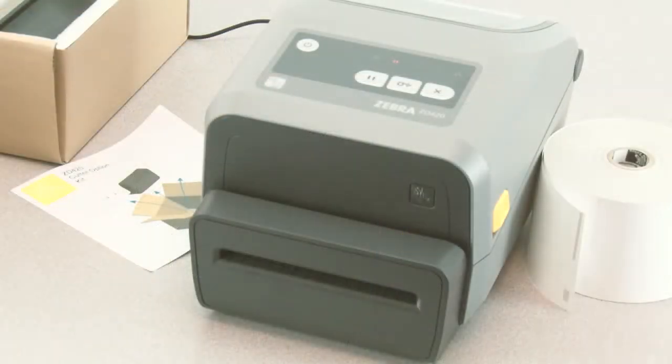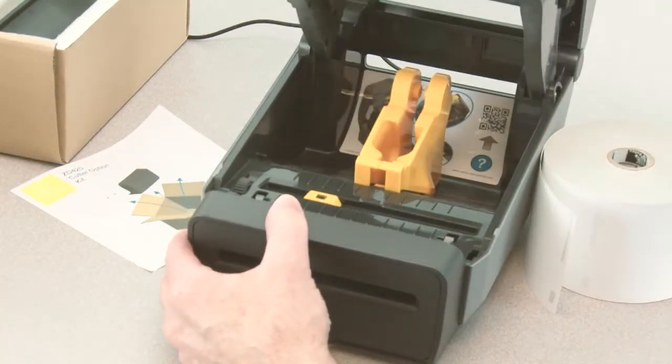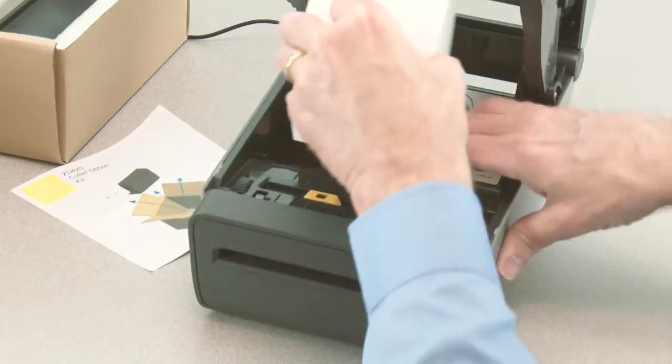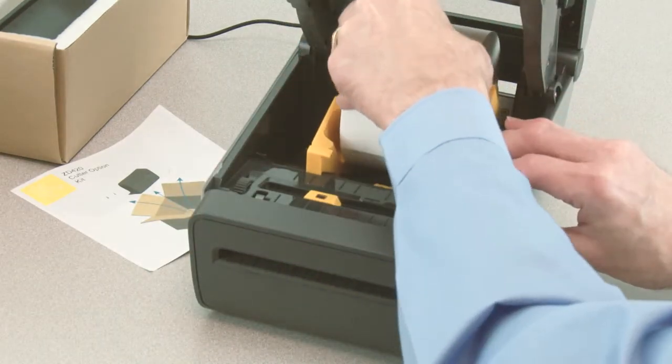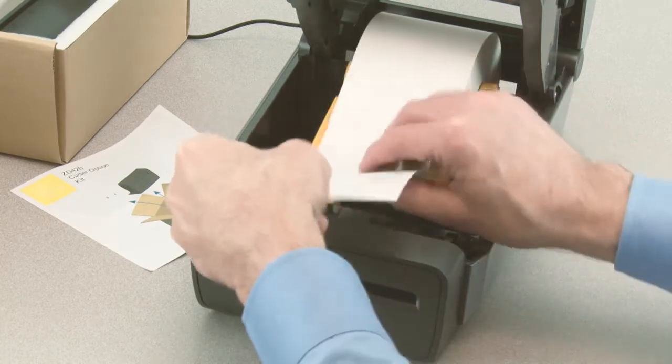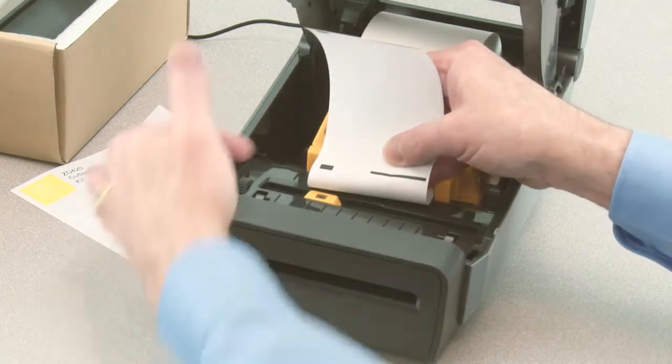To use the cutter, first open the printer. Open the roll holders and insert the media roll. Verify the media sensor is in the correct location for your media.